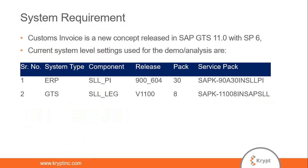Regarding system requirements: to implement this functionality, you need a minimum of SAP GTS 11.0 with Service Pack 6, and you also need to upgrade to Service Pack 30 in the ERP system, because some function modules, BAdIs, and new programs have been updated for customs invoice integration from ERP to GTS. Without this, we will not be able to implement and test this functionality.